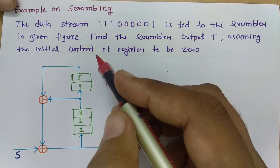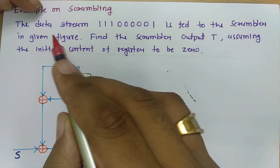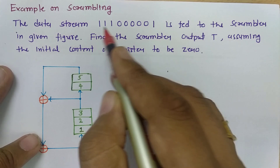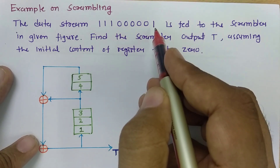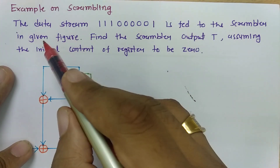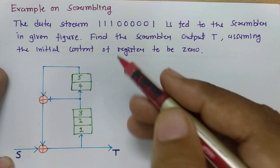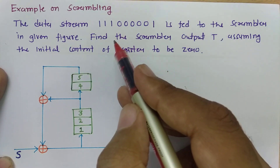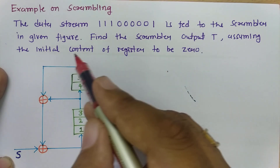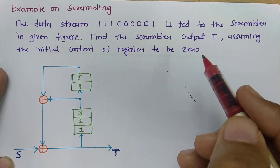In this session, we will solve one example based on scrambling. See the data string 111, five times 0, and 1 is fed to the scrambler shown in the figure. Find the scrambler output t, assuming the initial content of the register to be 0.